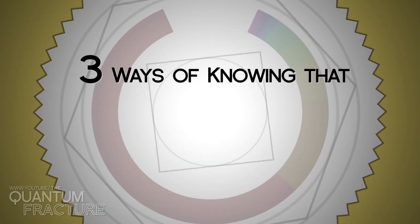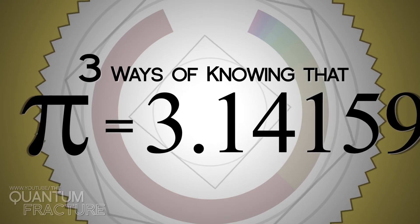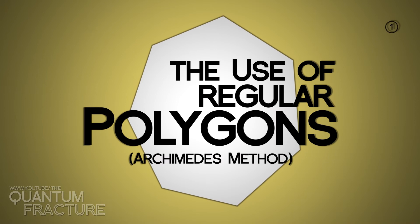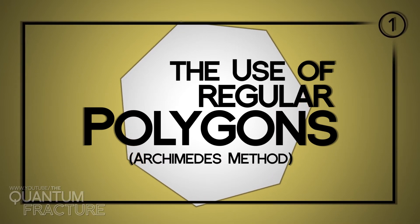These are the three ways of knowing that pi equals 3.14159, and all the rest. The first method is based on the utilization of polygons, those flat thingies whose sides are equal.